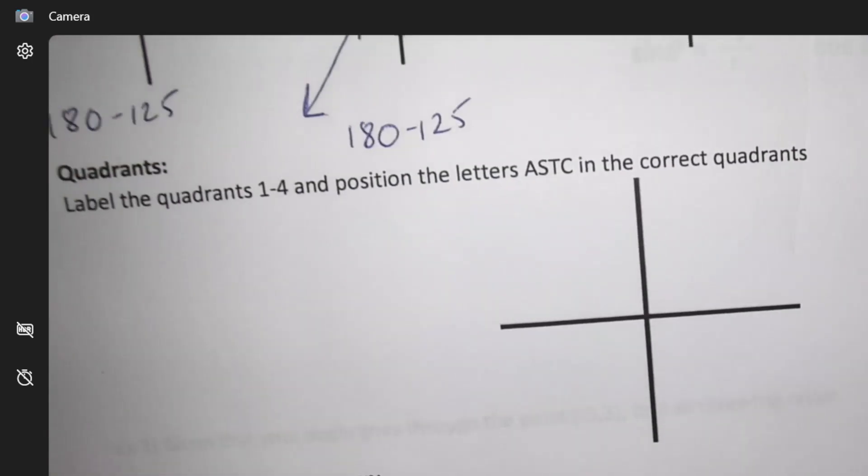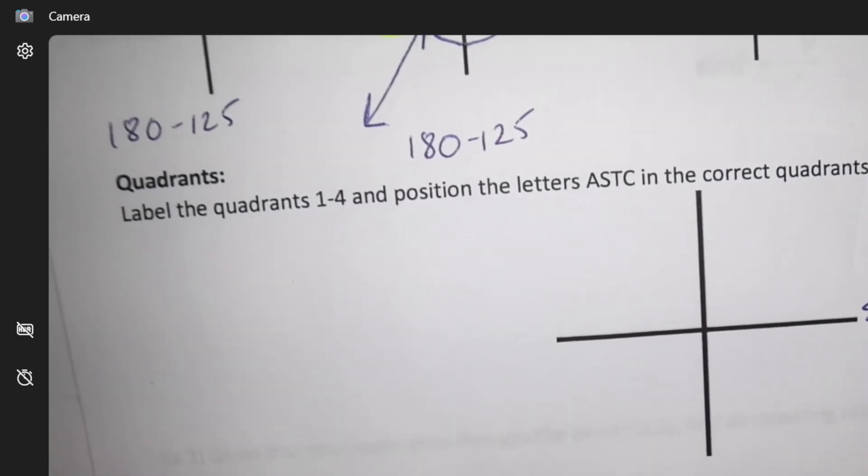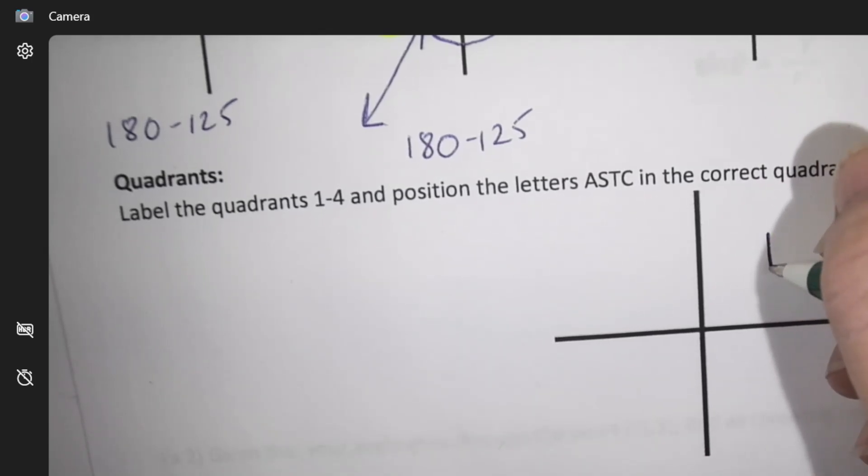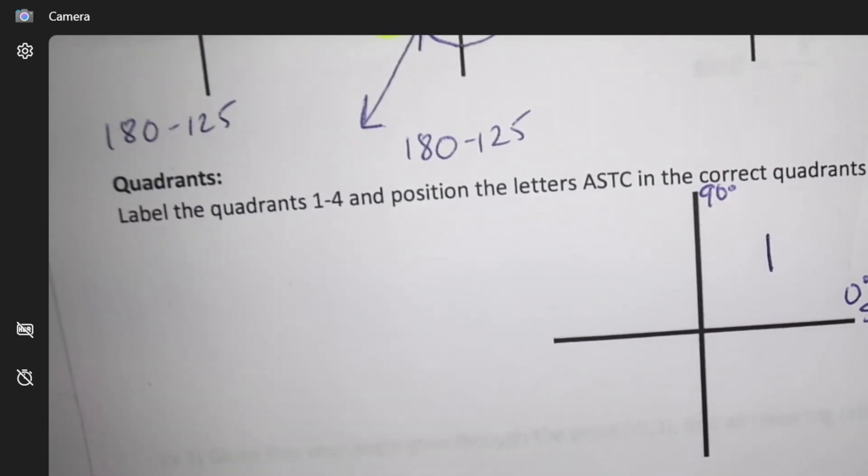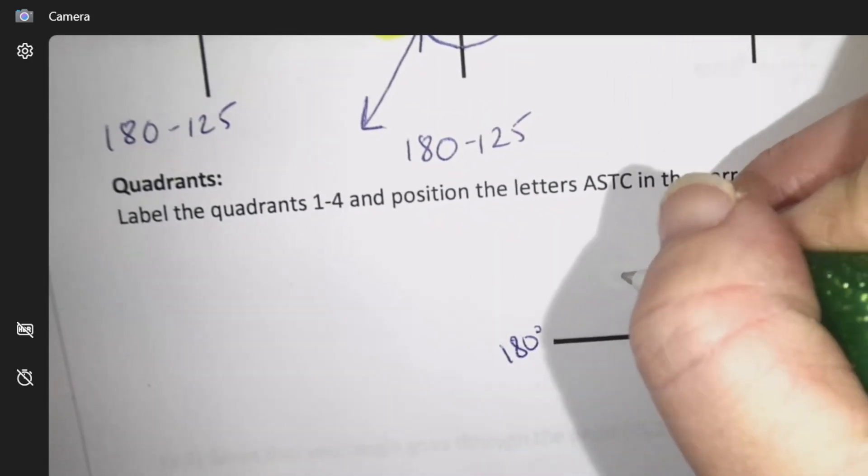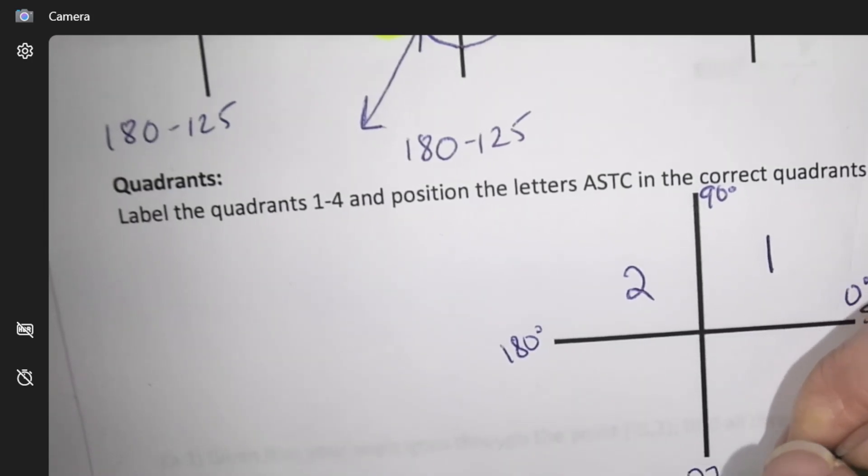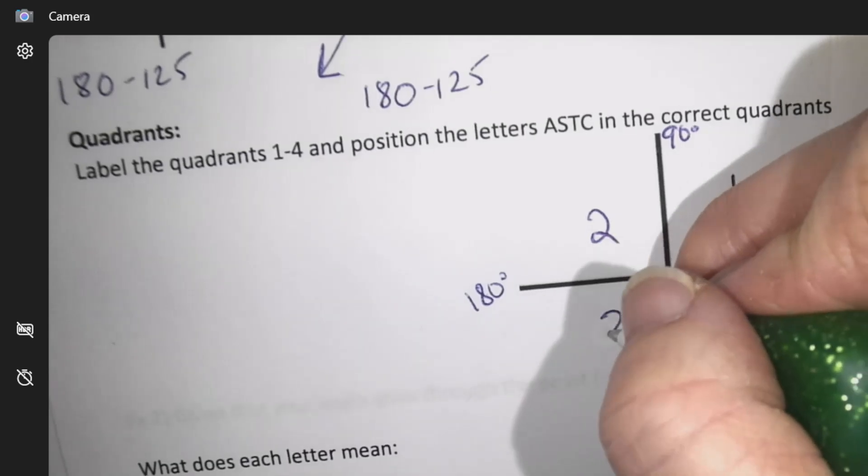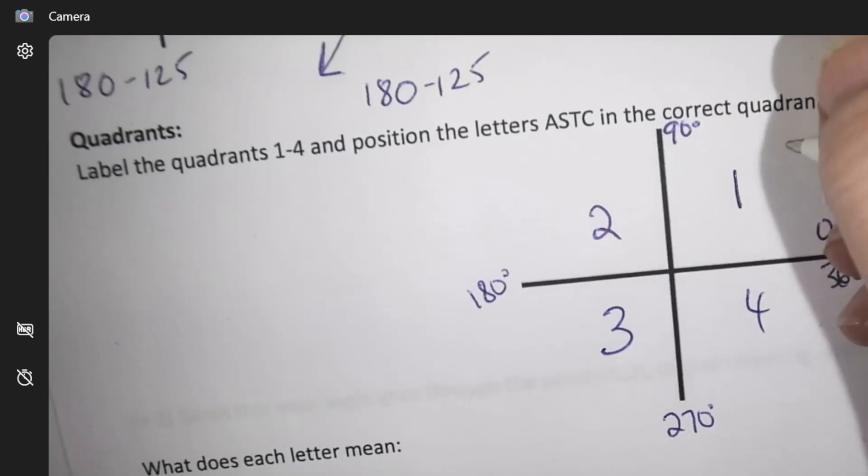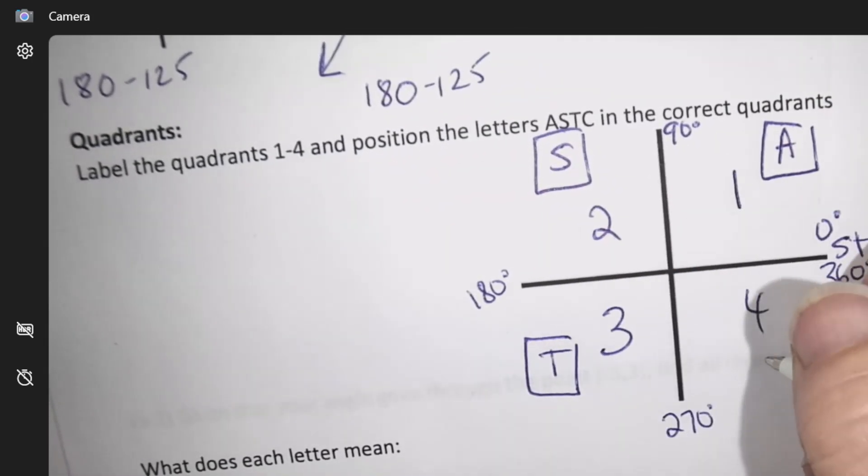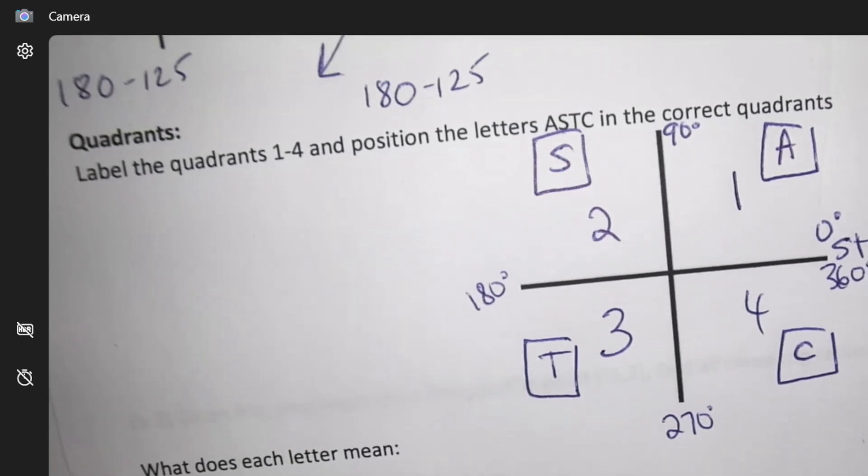Quadrant positioning. If we start here, this is quadrant 1. Between 0 and 90 degrees, you're in quadrant 1. From 90 to 180, that's called quadrant 2. Traveling in the same pattern. Anything between 180 and 270 is in quadrant 3. And any value between 270 and 360 would be in the fourth quadrant. Then there's this acronym we're going to learn called ASTC. And it follows that pattern, ASTC.